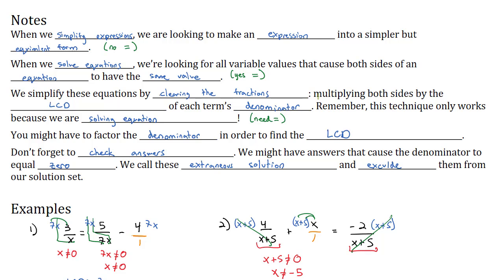In our first video on rational equations, we looked at how we could multiply both sides of the equation by the least common denominator in order to reduce out the fractions. In this video, we're going to take a look at how we might have to factor the denominators in order to find that least common denominator.